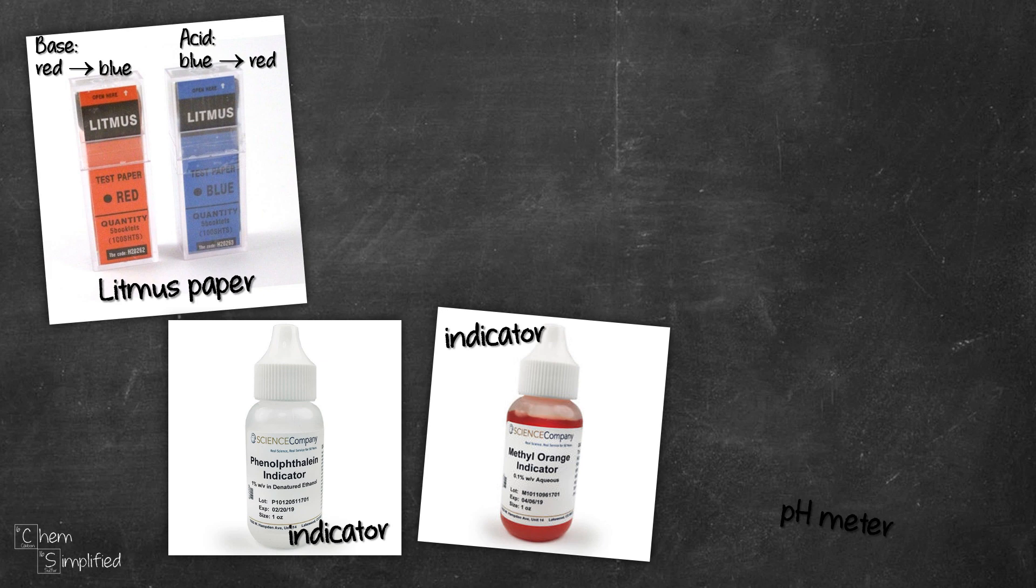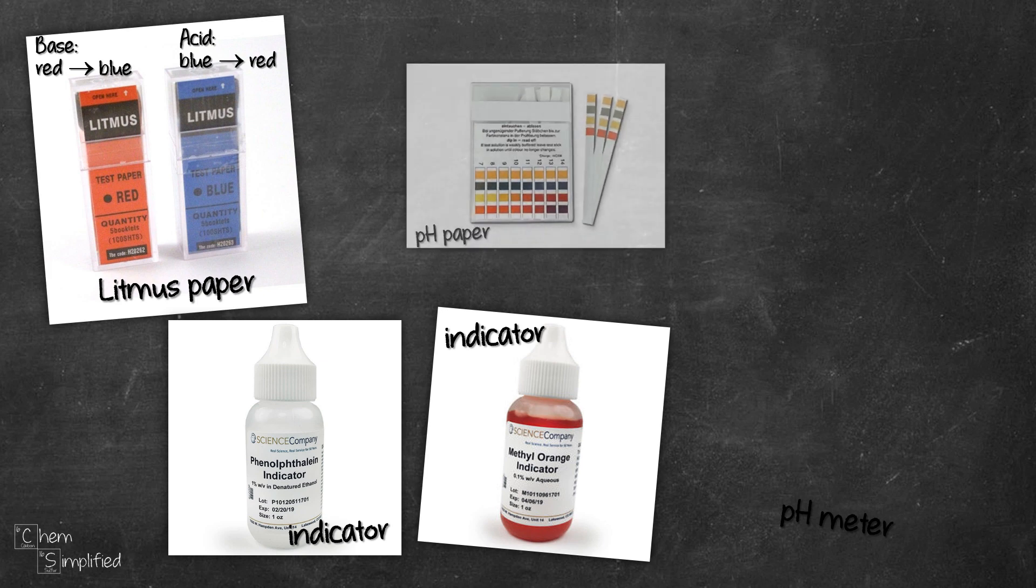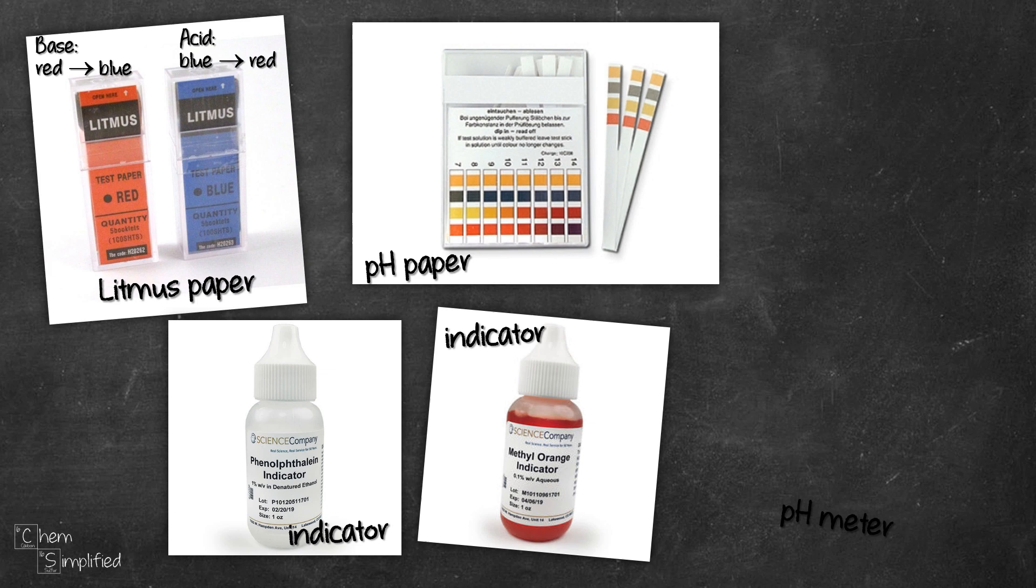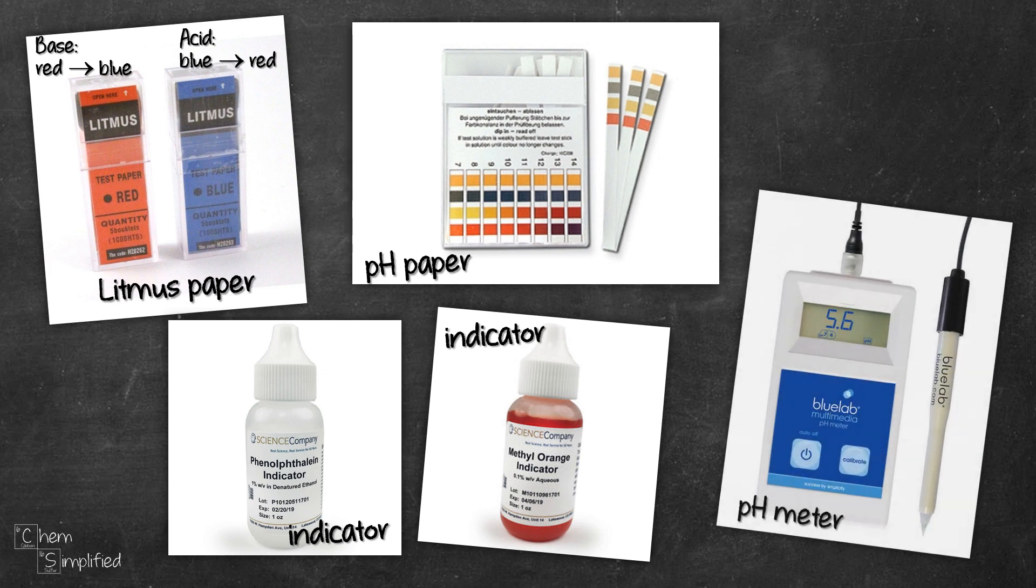Now, if we want a slightly more accurate pH measurement, we can use pH paper. Or if we want an even more accurate pH measurement, then a pH meter will do the job.